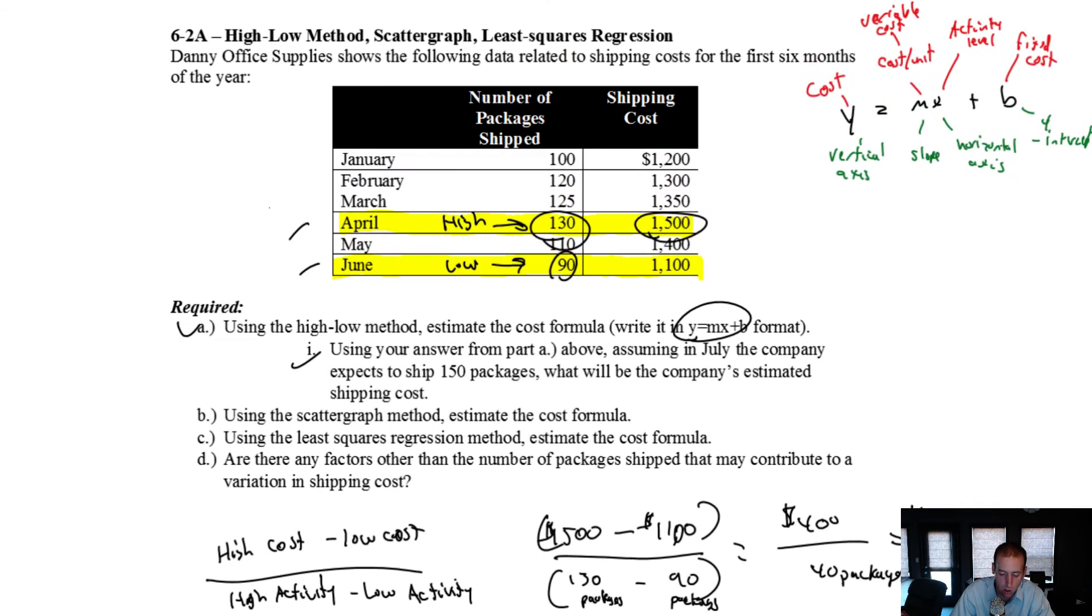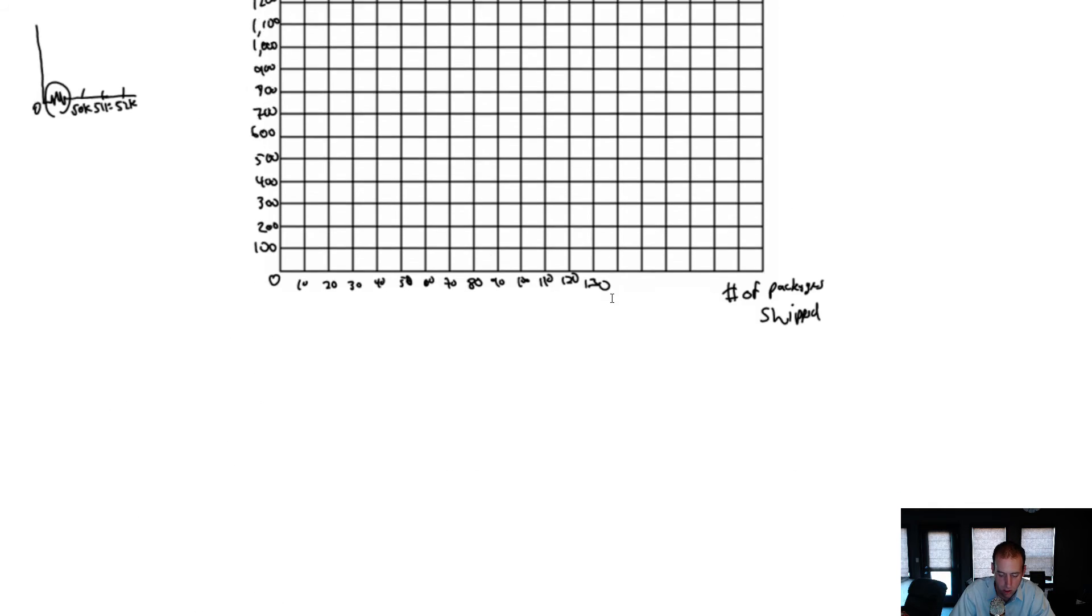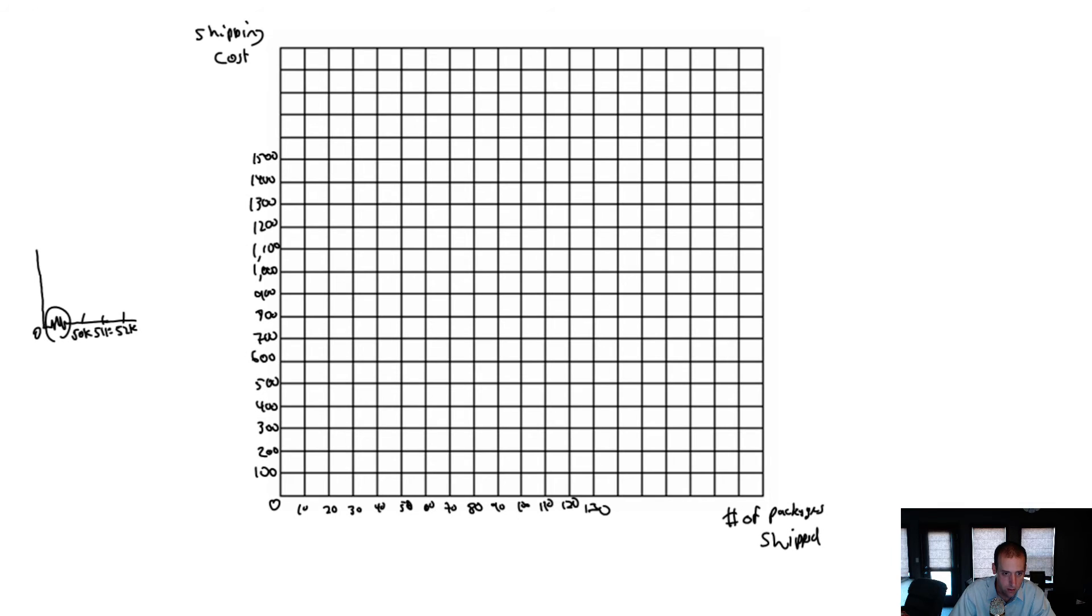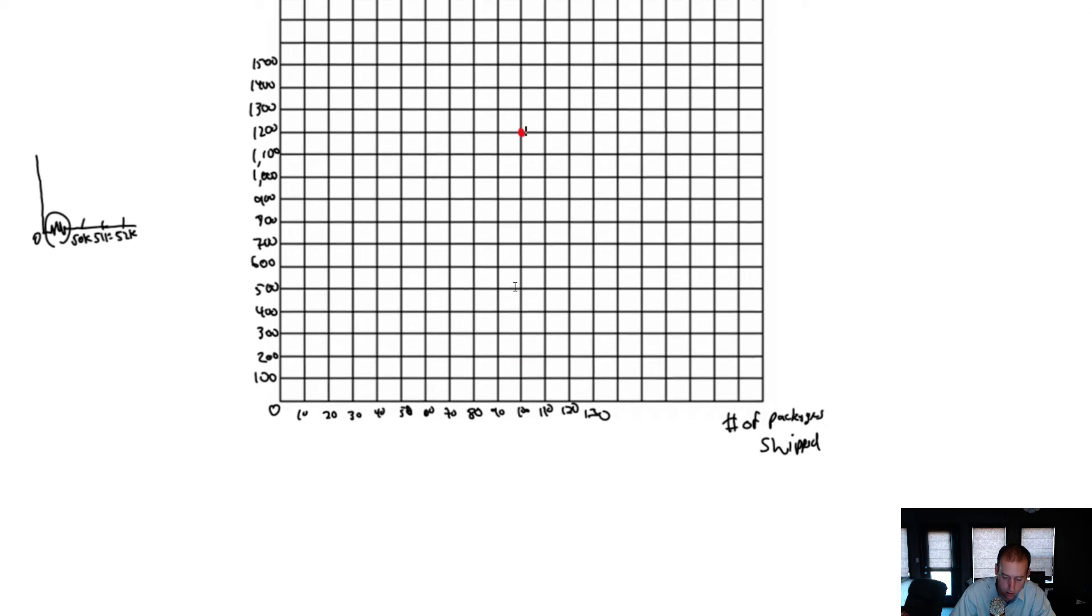Now let's graph it. We'll start with January. We don't use just the two high and low points—we use all the points. So 100 is my number of packages shipped, 1200 is my shipping cost. For January, 100 packages shipped and 1200 cost—there we are, that's January. For February, 120 and 1300. There we are.